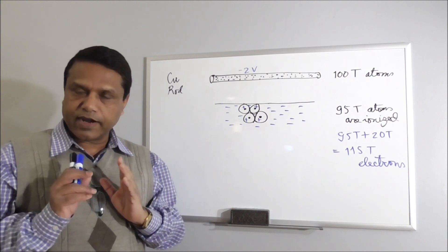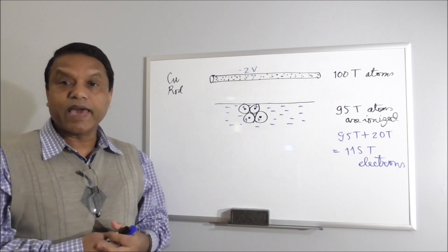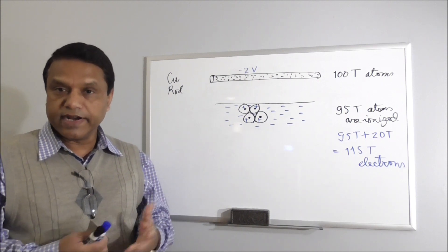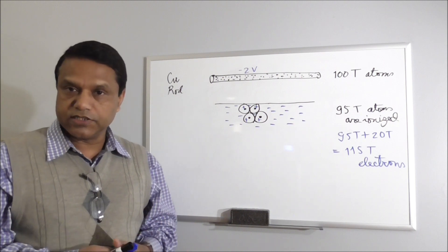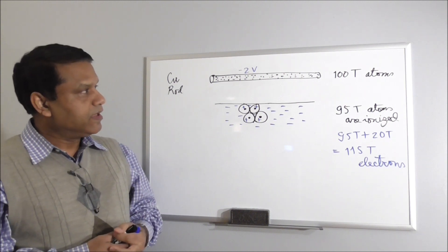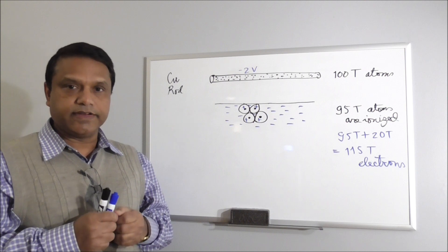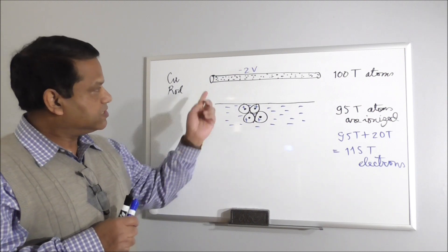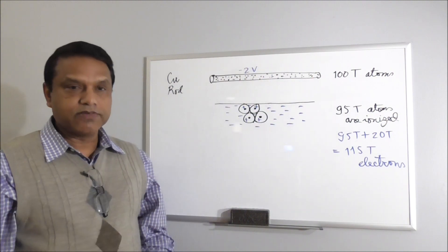So from this discussion, you get an understanding of voltage. Voltage is caused by imbalanced charge. If a piece of rod has more negative charge, it will have negative voltage. If it has more positive charges, then it will have positive voltage. And to reiterate: the voltage will be the same everywhere in this copper rod because it is a conductor.